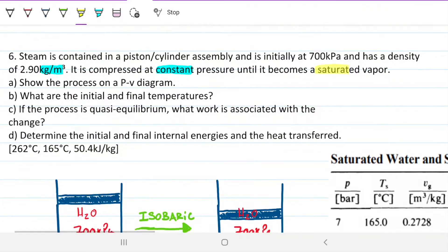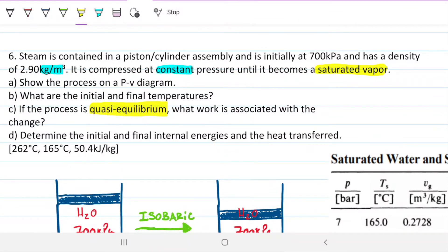Show the process on a PV diagram. Also answer, what are the initial and final temperatures? If the process is quasi-equilibrium, what work is associated with the change? This means the process is occurring very slowly so that at any given moment, the system is in equilibrium. And finally determine the initial and final internal energies and the heat transferred.